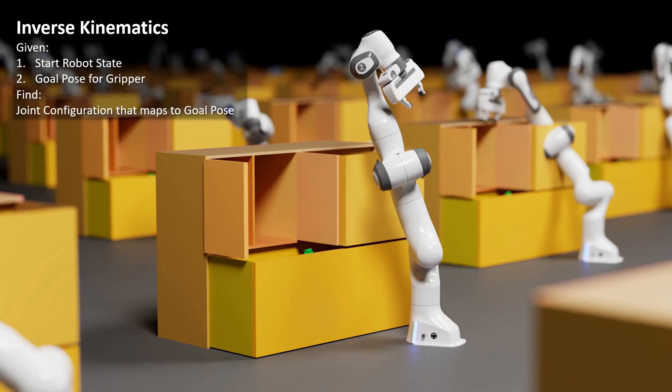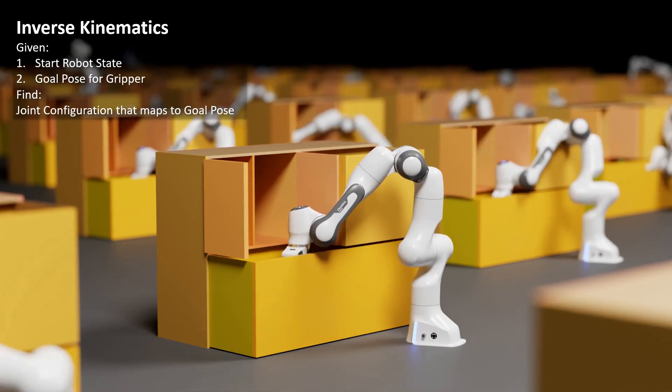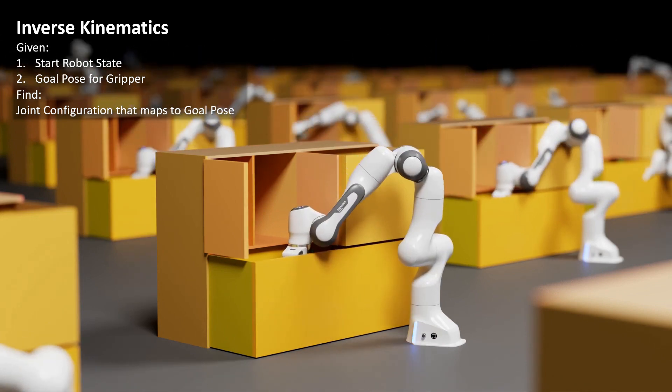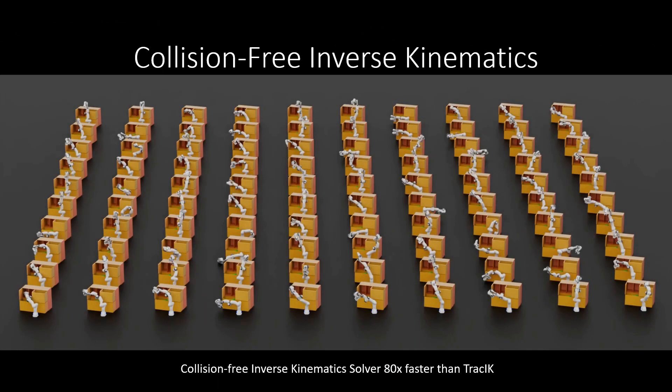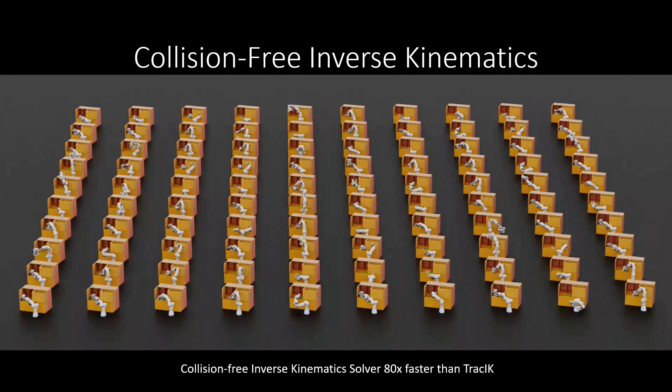In the inverse kinematics step, we run numerical optimization to find a collision-free joint configuration that places the robot at the goal pose. We see here the iterations of the numerical optimization where the robots start at a random joint configuration and converge to the goal pose. We see 100 seeds of inverse kinematics being optimized in parallel. Kurobo's collision-free IK solver is 80 times faster than Trac IK.